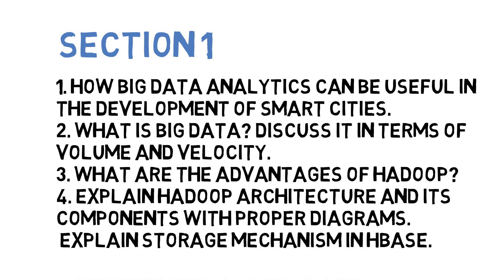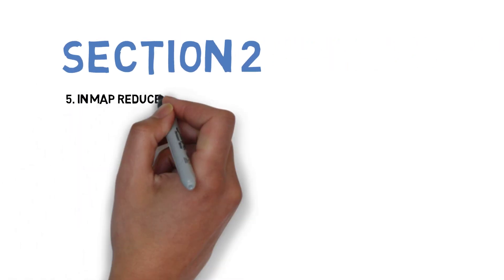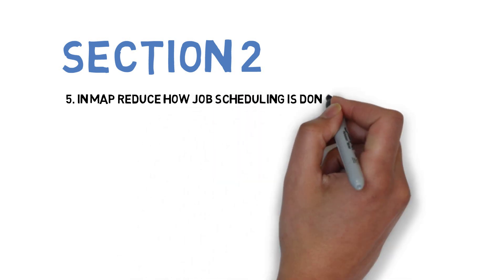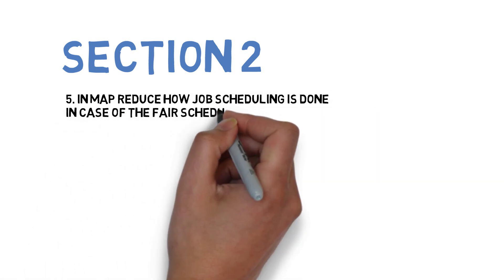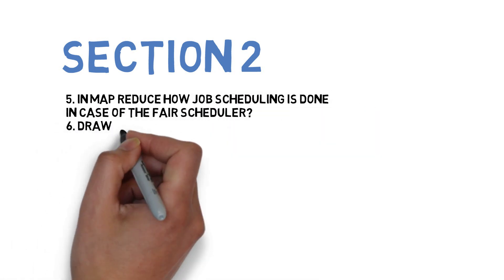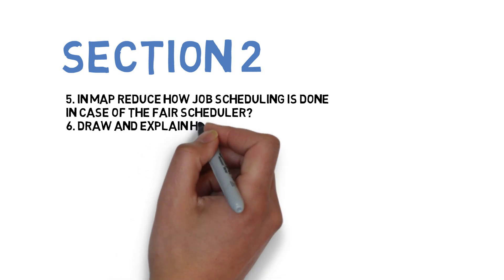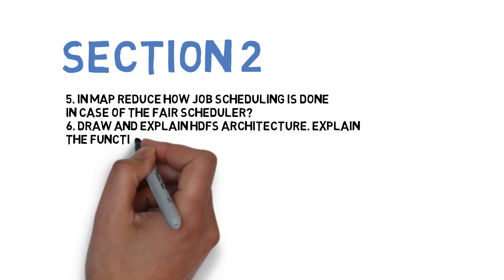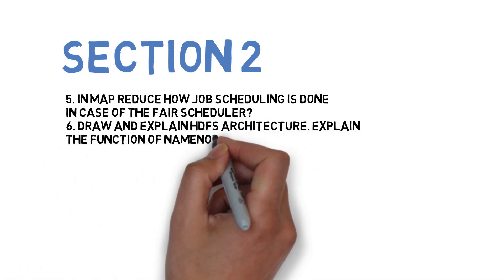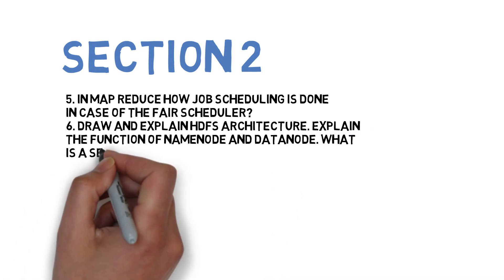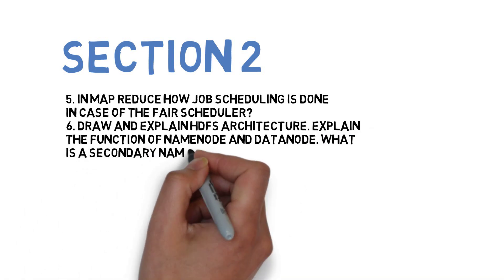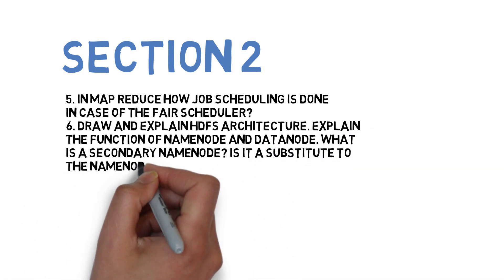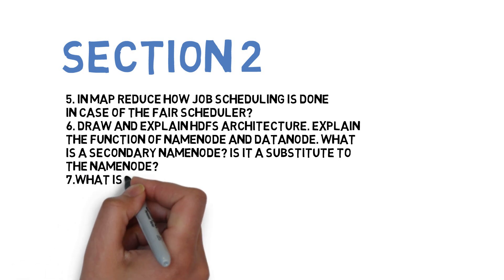Moving to section 2 — the fifth question is in MapReduce how job scheduling is done and in case of a fair scheduler. The sixth question is draw and explain HDFS architecture, explain name node, data node, what is secondary name node, and is it a substitute for the name node.